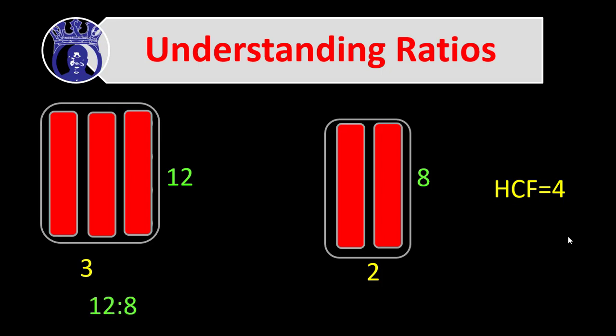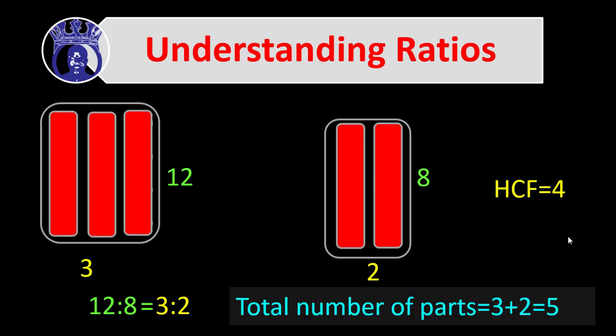We can now write that 12 to 8 can also be expressed as 3 to 2, which is much easier to compare. With respect to the 3 and 2, we can sum them to form our total number of parts, so 3 plus 2 gives us 5.